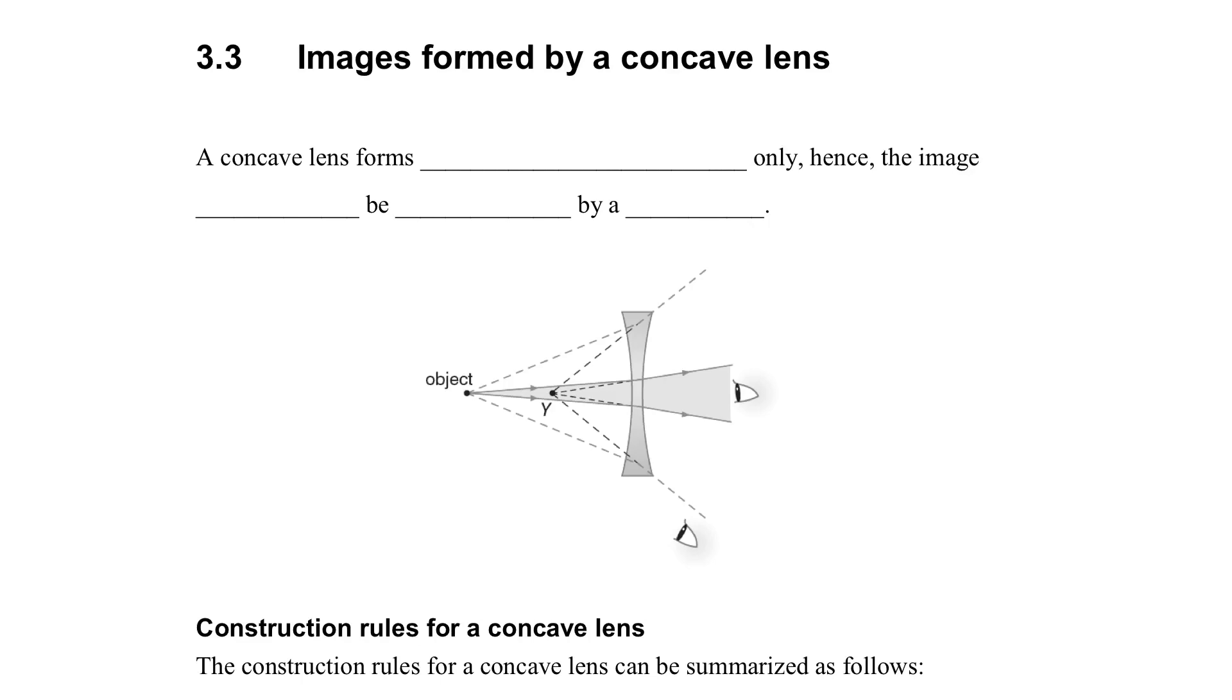So in this chapter, we will talk about the concave lens. We will skip to the concave lens first because it's simpler. For concave lens, it just forms one kind of image, which is the virtual image.